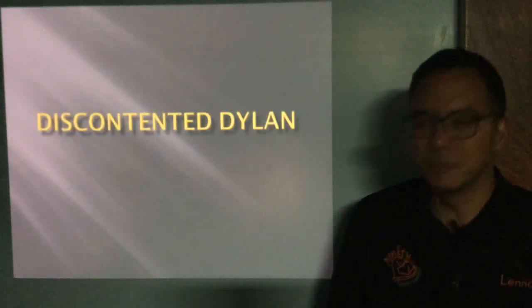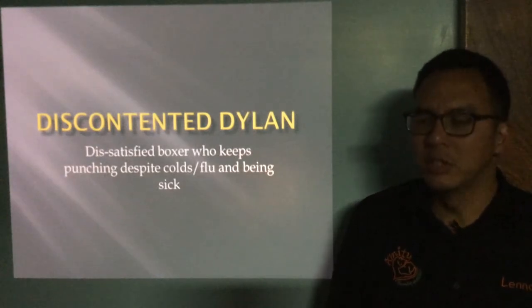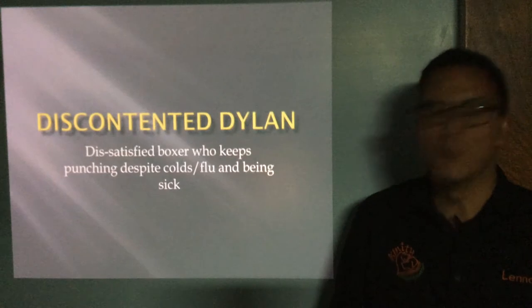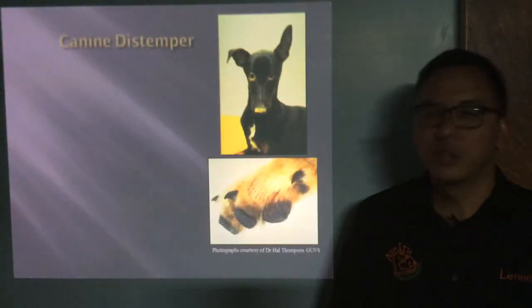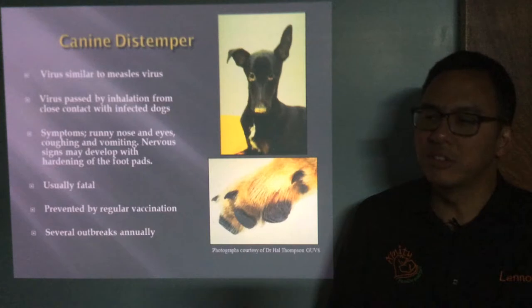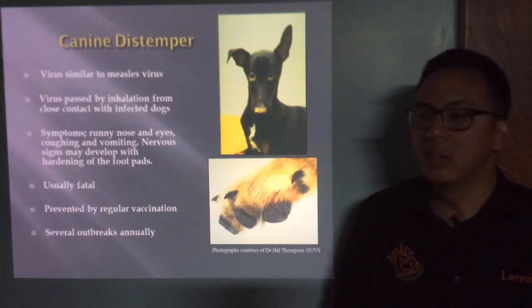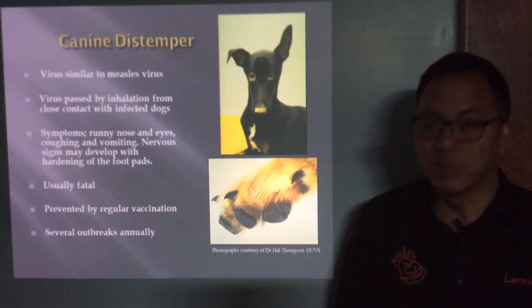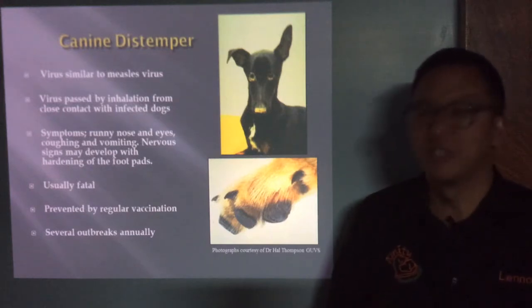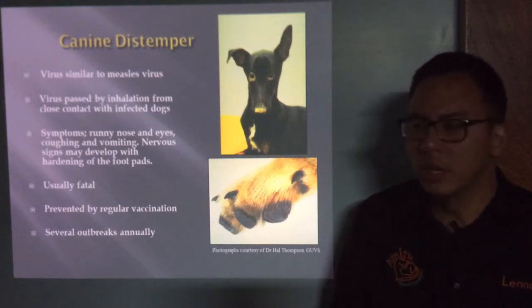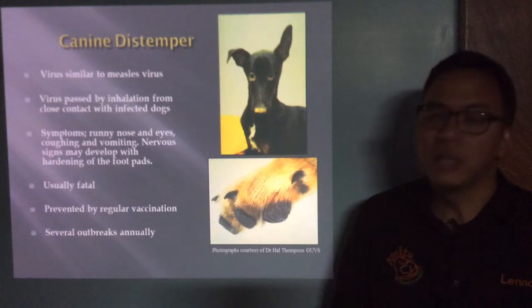Let's talk about Discontented Dylan — imagine a dissatisfied boxer who keeps punching despite colds, flu, and being sick. We're talking about canine distemper. It's a virus similar to the measles virus, passed by inhalation and close contact with infected dogs. Symptoms include runny nose and eyes, coughing, vomiting, and nervous signs, with hardening of the foot pads. It is usually fatal and there isn't much of a cure. It is prevented by regular vaccination, and in the UK there are still several outbreaks annually.